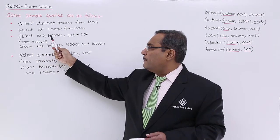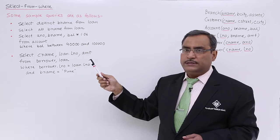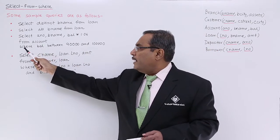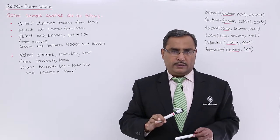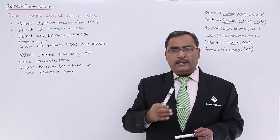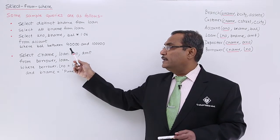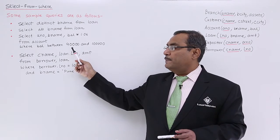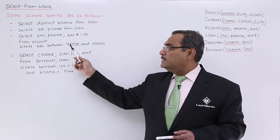Next one: select account number, branch name, balance star 1.06 from account where balance between 90,000 and 1 lakh. This is the query. If you want to write the query in English, it will be something like this: List account number, branch name, and adding 6 percent interest to the balance